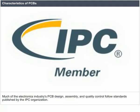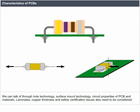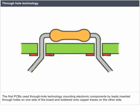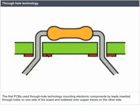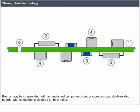Characteristics of PCBs: Much of the electronic industry's PCB design, assembly and quality control follow standards published by the IPC organization. Through-hole technology: the first PCBs used through-hole technology, mounting electronic components by leads inserted through holes on one side of the board and soldered onto copper traces on the other side. Boards may be single-sided or more compact double-sided boards with components soldered on both sides.